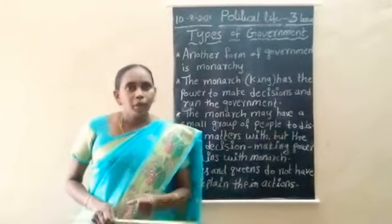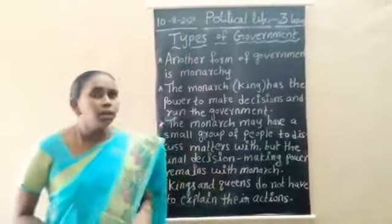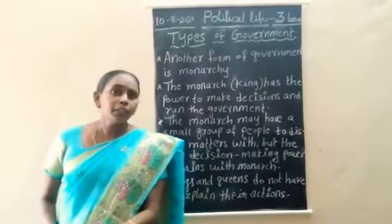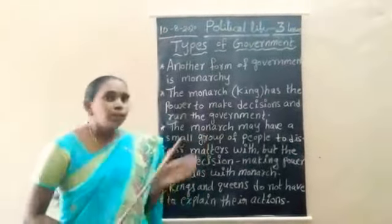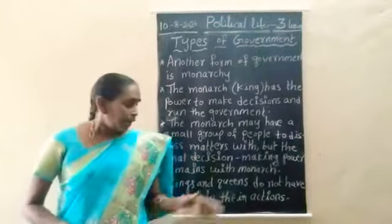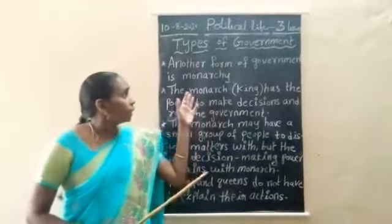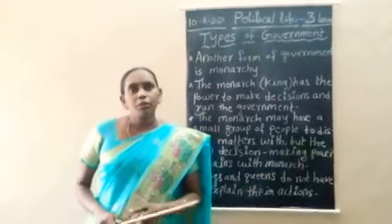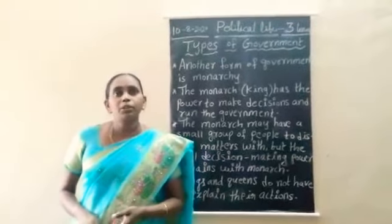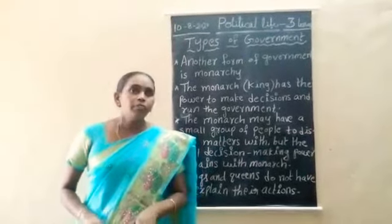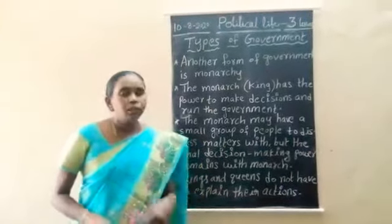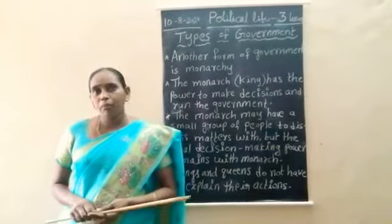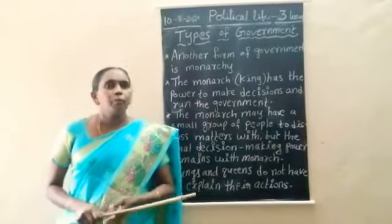No one has the right to question the king about any action imposed on the people. The people have to accept the king. In a democracy, all actions are implemented for the people's sake. In the monarchy, the king or queen implements any action on the people and there is no right for anyone to question the king. In the next class, we will learn about the democratic form of the government. Thank you.